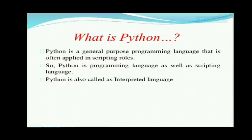Python is also called an interpreted language. In programming there are two types: compiler and interpreter. A compiler directly converts high level language code into machine language or binary language. In the case of an interpreter, it first takes high level code and converts it into intermediate code called byte code, and then converts that byte code into machine language. That is why Python is called an interpreted language.